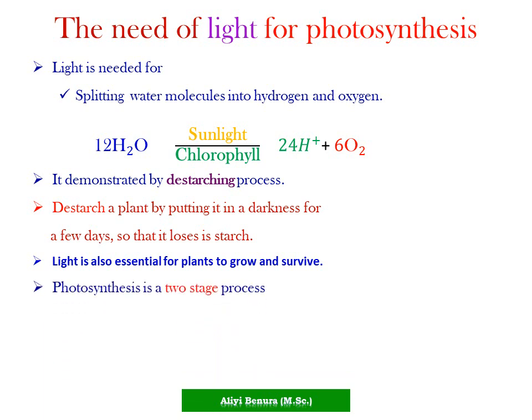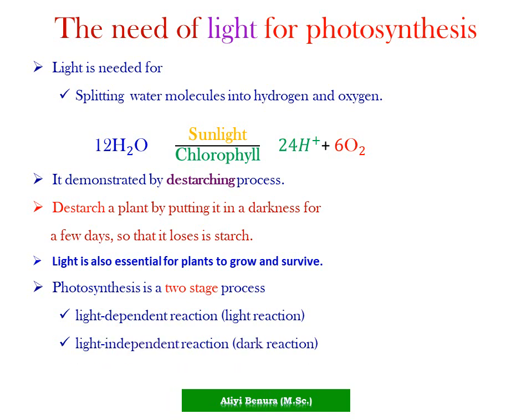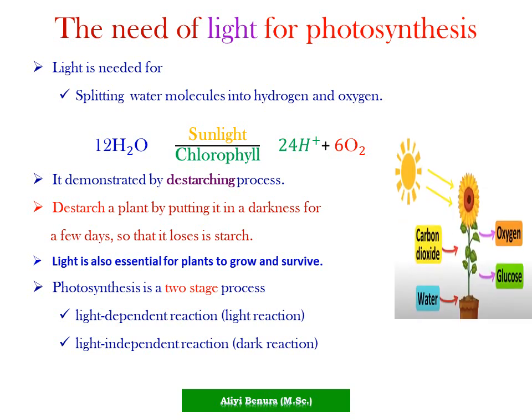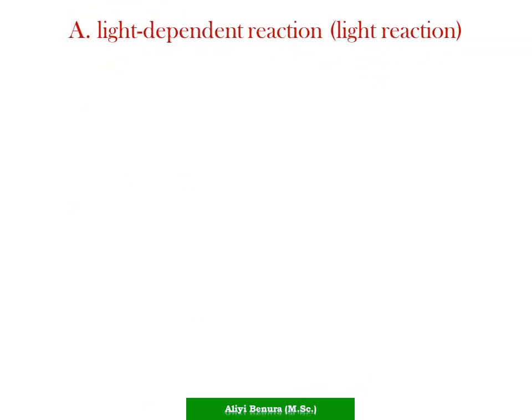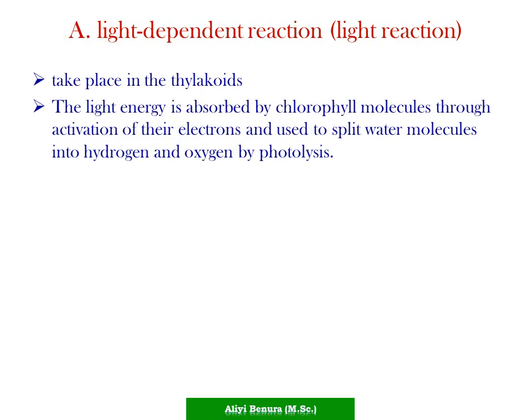Photosynthesis is a two-stage process. The first stage is the light-dependent reaction, or light reaction. The second stage is the light-independent reaction, or dark reaction. The light-dependent reaction takes place in the thylakoid membranes, where light energy is absorbed by chlorophyll molecules, activating their electrons and splitting water molecules into hydrogen and oxygen by photolysis.